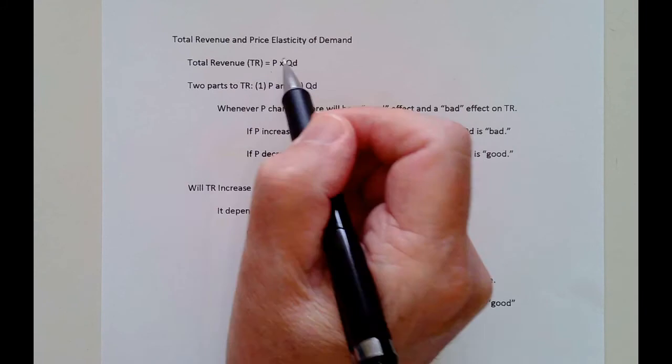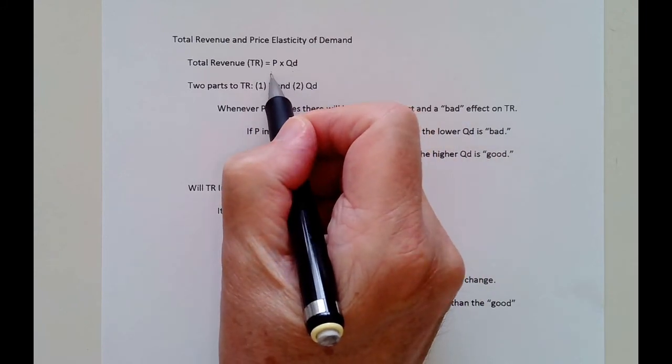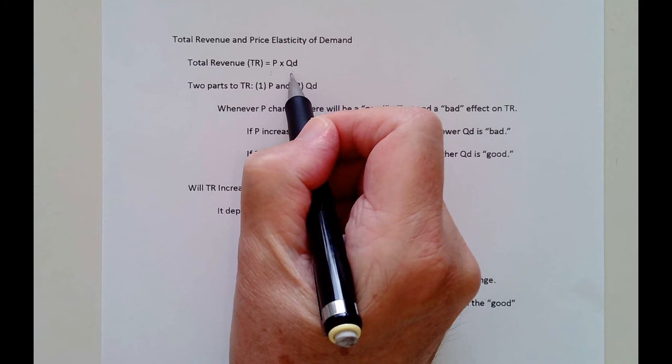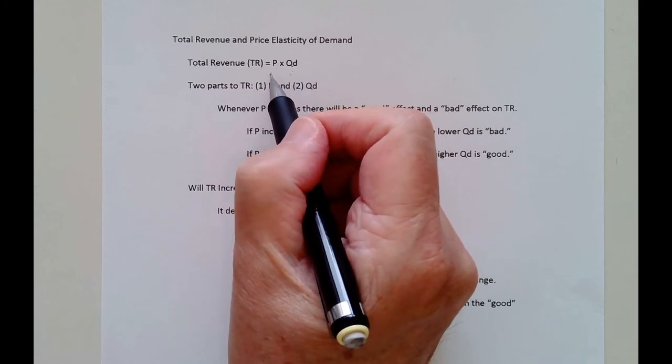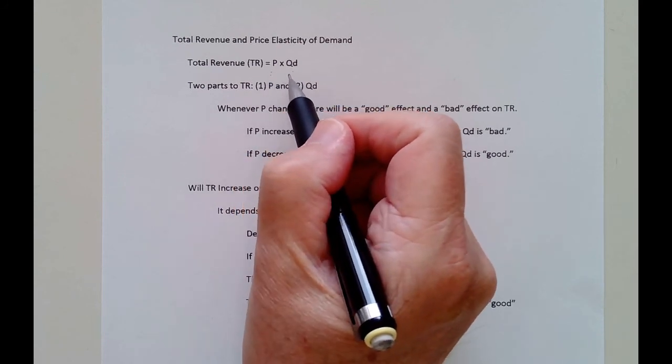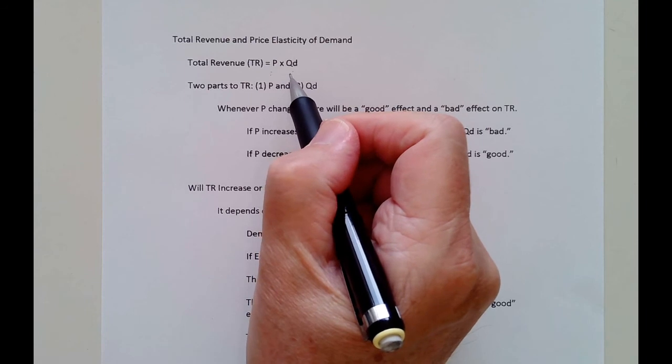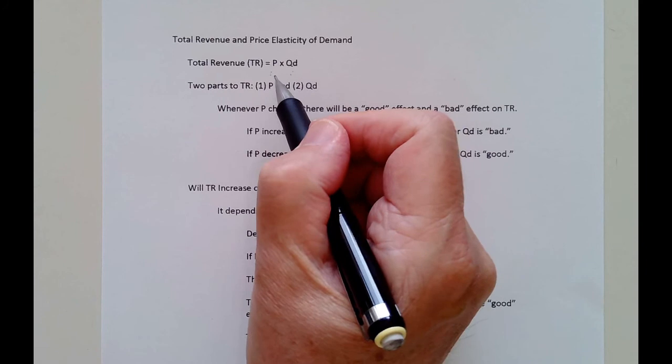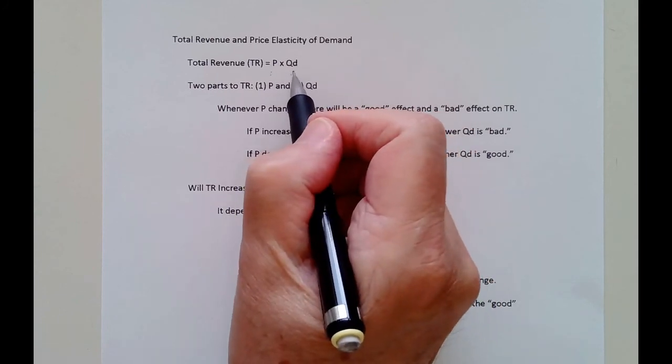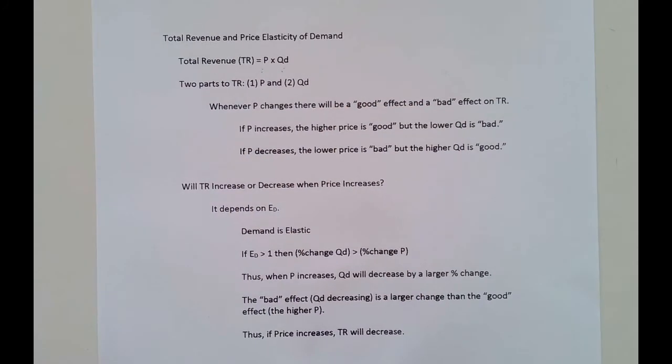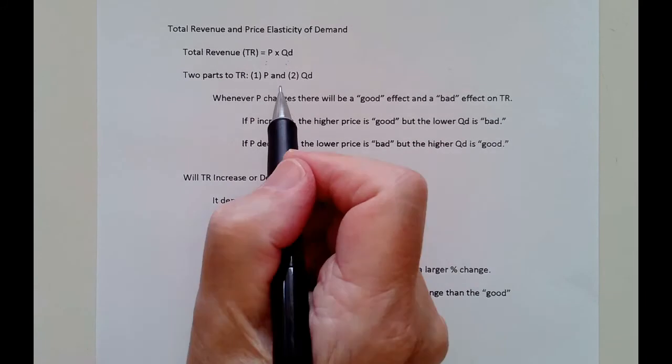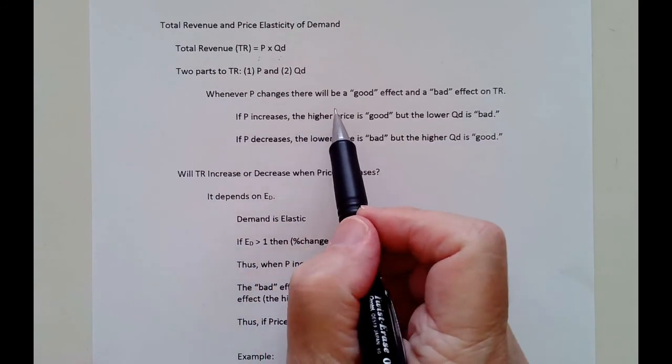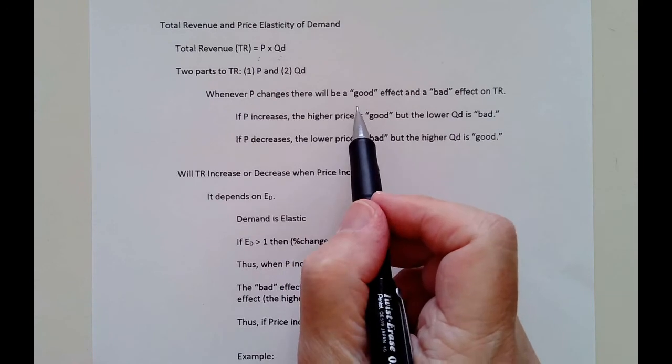Quantity demanded is your sales. Price is your price. Sometimes you have power over the price if you're a price maker. Sometimes you don't if you're a price taker. The quantity demanded comes from your customers. They decide how much they're going to buy at that price. You can try to affect that through advertising, through some kind of marketing campaign, coupons, things like that. But again, that comes from the customers. Now there's two parts to your revenue: a price component and a sales component, quantity demanded.